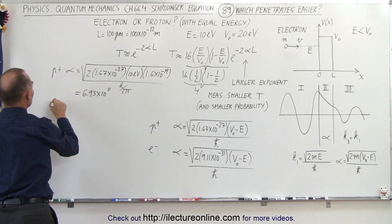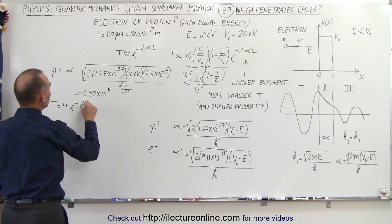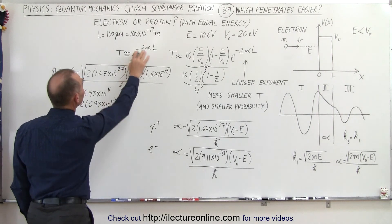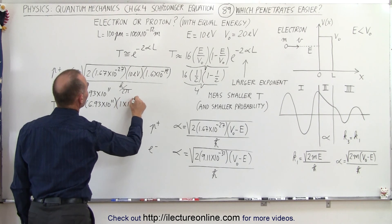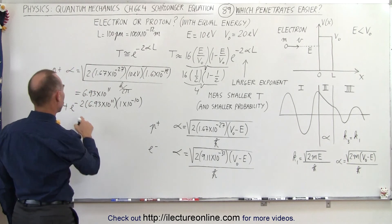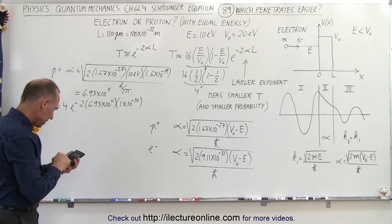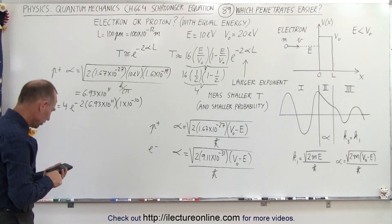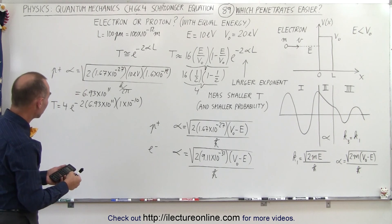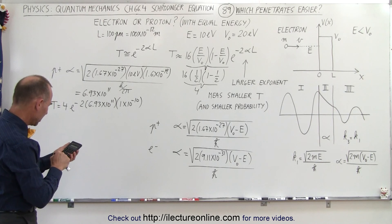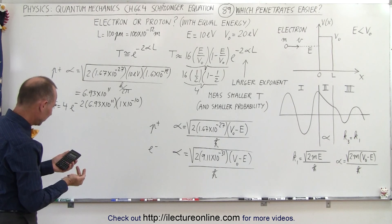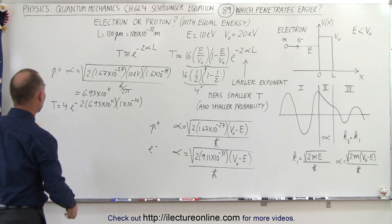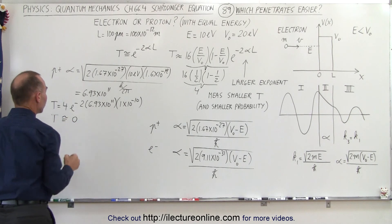Now when we find the transmission coefficient for the proton: T equals 4 times e to the minus 2 times 6.93×10^11, with L equal to 1×10^-10 meters (same as 100 picometers). Computing the exponent: 6.93e11 times 1e-10 times 2 gives 138.6. That's a huge number in the exponent, so the transmission coefficient is virtually zero for a proton.